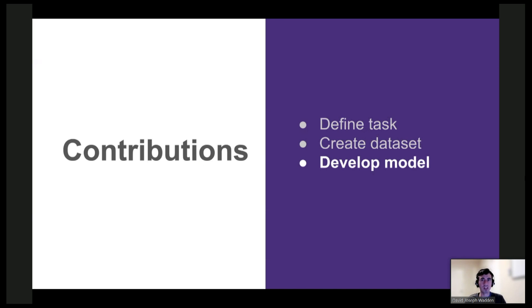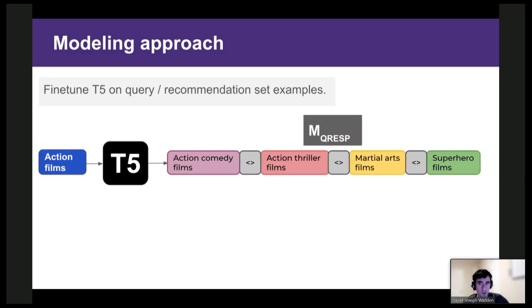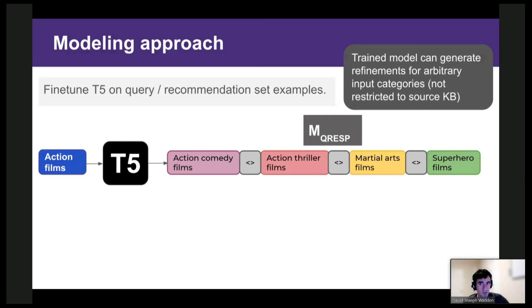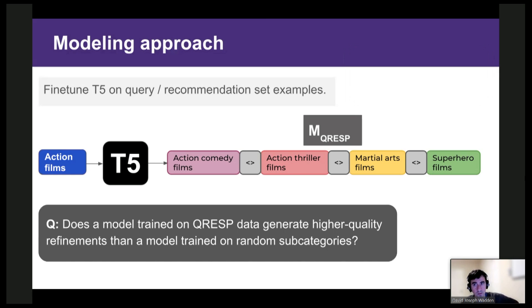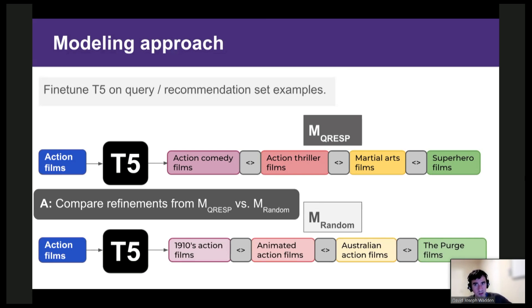Now that we have a dataset, we can use it to train a model. So for our model, we fine-tuned T5 to take queries as input and output full QRESP refinement sets as a sequence. And this gives us a seq-to-seq model that can generate refinements for any query we want, regardless of whether that category exists in a knowledge base or not. So that's good, but of course, we still need to demonstrate that the data selection procedure we proposed here leads to a better model than we get if we just trained on random subcategories. So to do that, we train a separate model on random subcategories, make predictions for both models, and then ask annotators to compare the outputs.